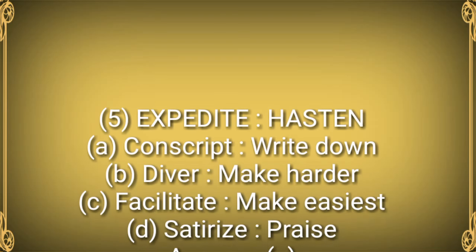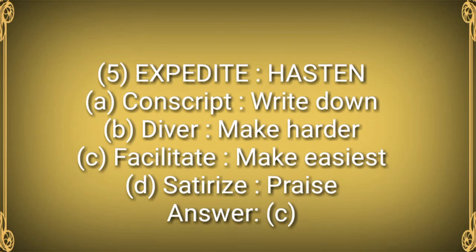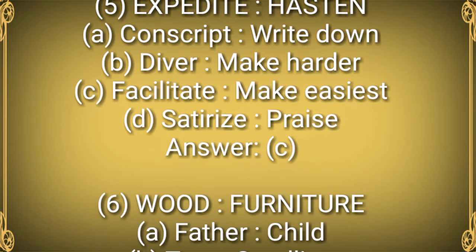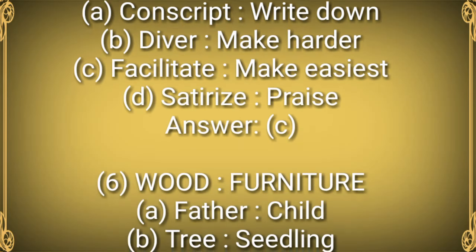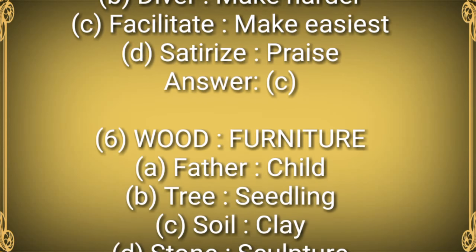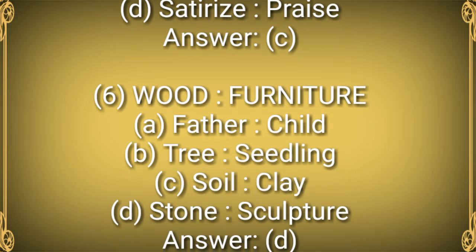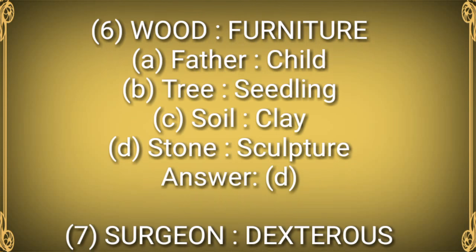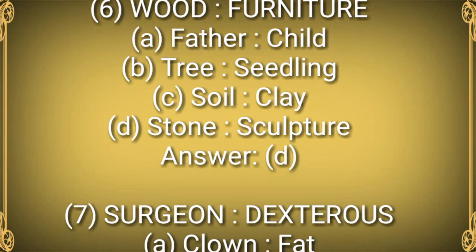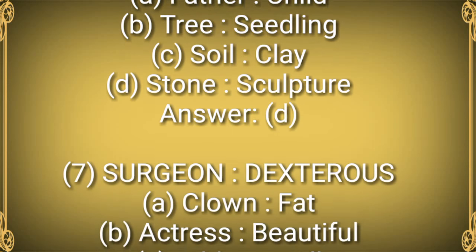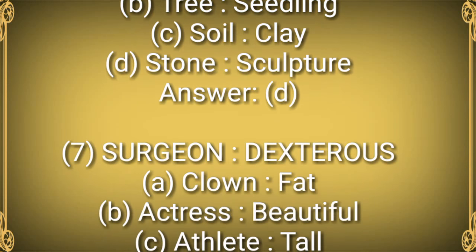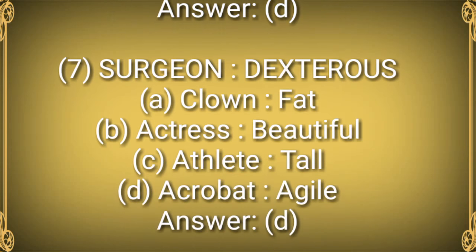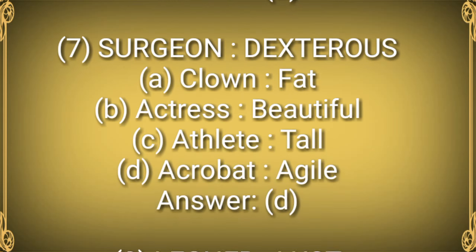Question 5: EXPEDITE : HASTEN. Options: A) Conscript : Write down, B) Diver : Make harder, C) Facilitate : Make easiest, D) Satirize : Praise. Answer: C. Question 6: WOOD : FURNITURE. Options: A) Father : Child, B) Tree : Seedling, C) Soil : Clay, D) Stone : Sculpture. Answer: D.